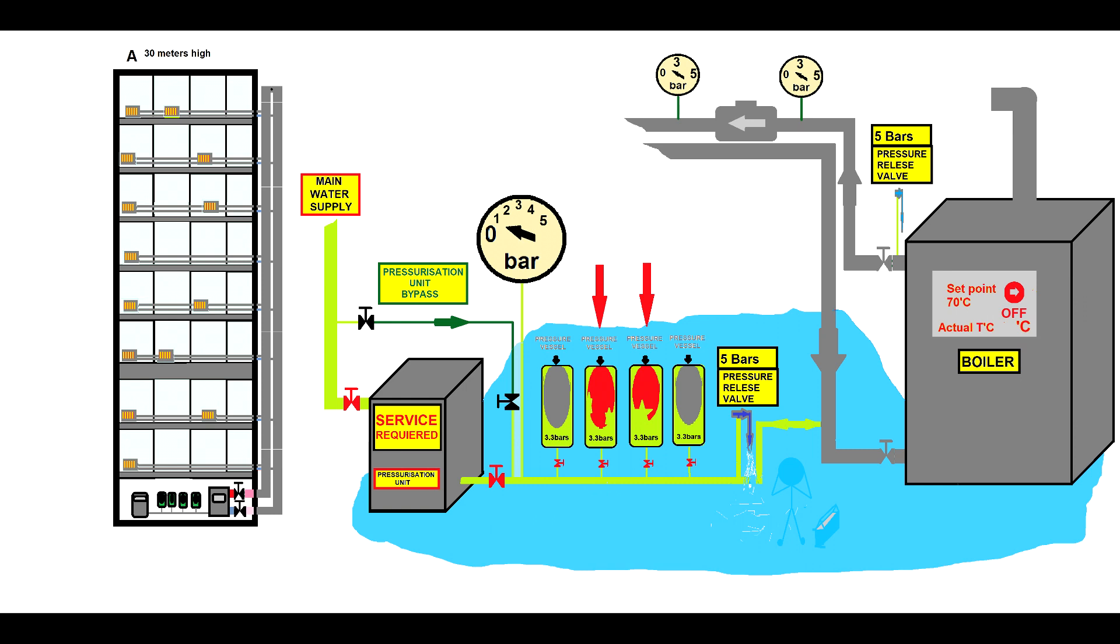Because the pressurization unit is interlocked with the boiler, under such alarm, the boiler and the pump will be turned off. The system will cool down and the pressure will drop below the limit.